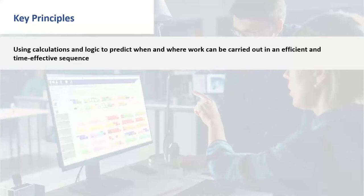Before we dive into the detail of the functionality, it's worth going through some key principles to make sure we all have a common understanding. There are some misconceptions with scheduling — not least the belief that whatever you do, if you haven't got enough capacity to get everything out on time, putting in a software system will cure that. There are some fundamental things the scheduler can't do. If you physically haven't got the capacity to get the product out the door, the system is not going to cure that for you. But we'll certainly show you how we can help identify some solutions.